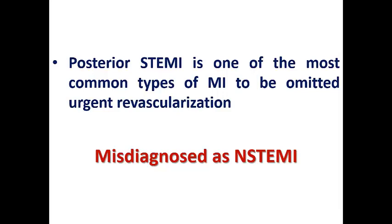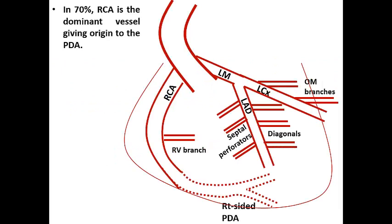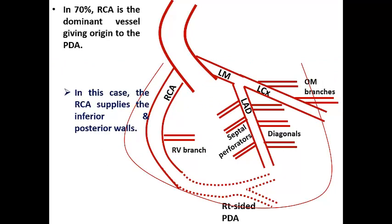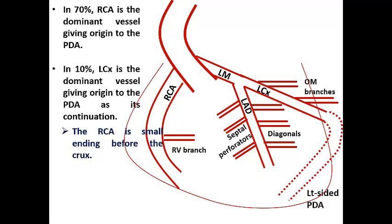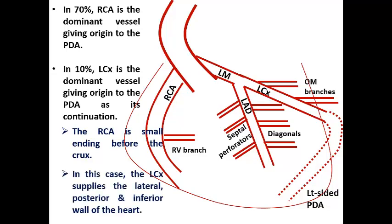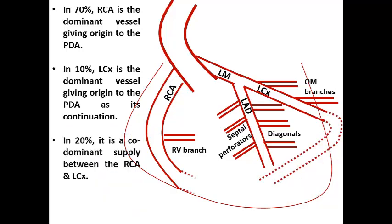The right coronary artery is dominant in about 70 percent of cases, giving origin to the right-sided PDA. In this case, RCA supplies the inferior and posterior wall, whereas LCX supplies only the lateral wall. In about 10 percent, LCX is the dominant artery, giving rise to the left-sided PDA. In this case, LCX supplies the lateral, posterior, and inferior wall. In about 20 percent, it is co-dominant between RCA and LCX.